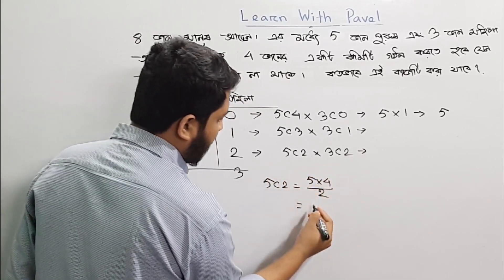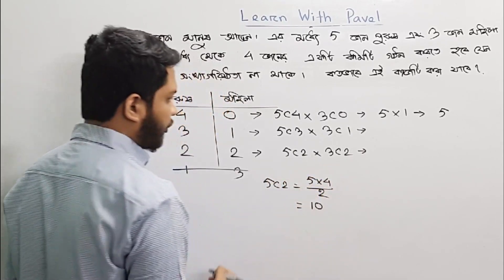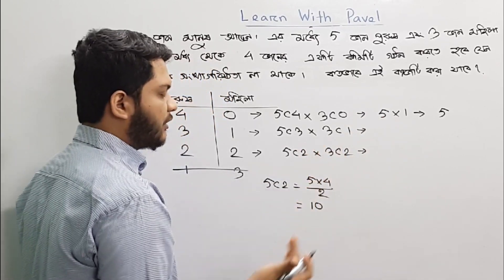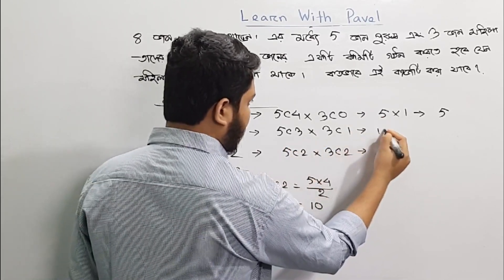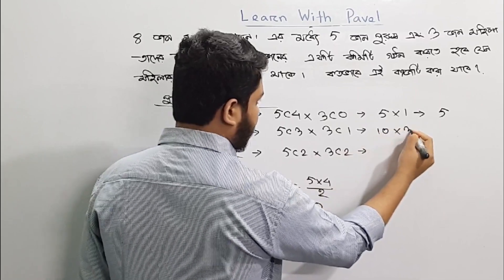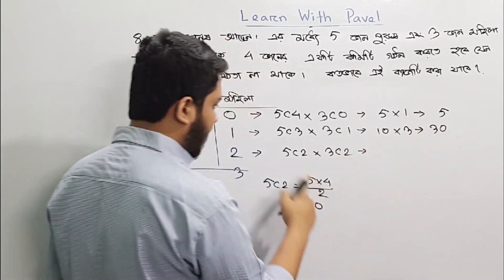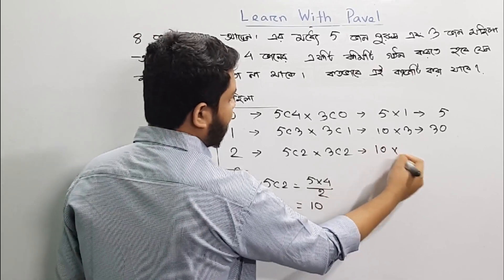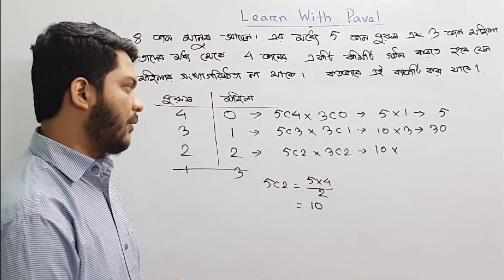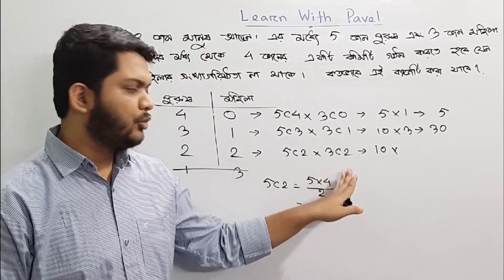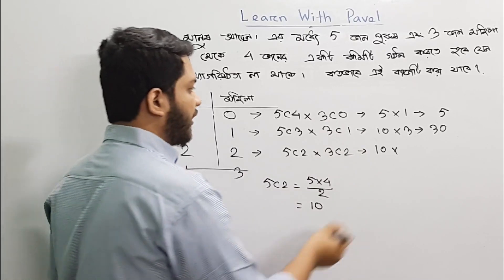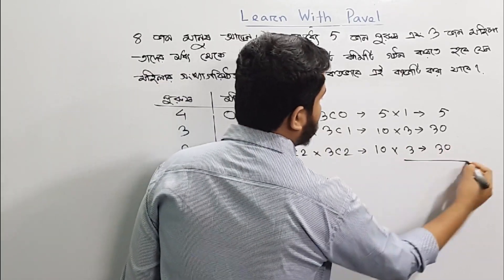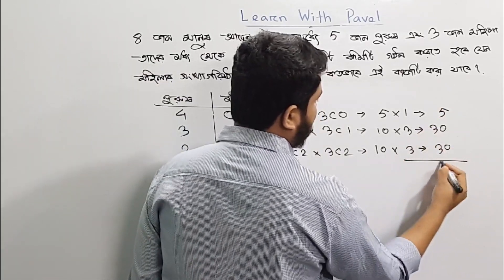Then we have 10. 3C1 is 10. So 3 is equal to 30. 5C2 is equal to 10. 3C2 is equal to 3C1. 3C1 is equal to 3. So we have 3. So we have 16.